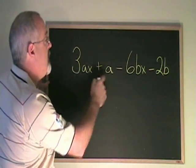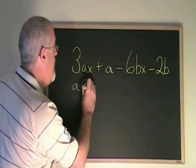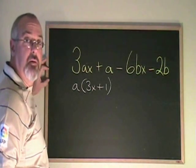If I look at the first two terms here, they have a common factor of a. So I can factor out an a and I end up with 3x plus 1.